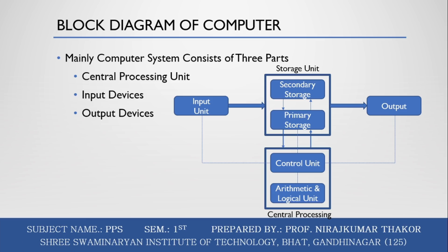The CPU is like the heart or brain of the computer. The user does not get the desired output without the necessary operations taken by the CPU. The CPU is responsible for processing all instructions given by the user. Data is entered through input devices such as keyboard, mouse, etc., processed by the CPU, and then the computer produces output through output devices such as monitor, printer, etc.